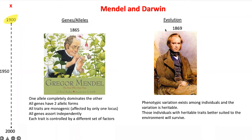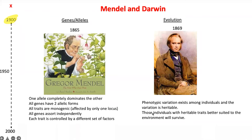Around the same time, Charles Darwin also published his book, having worked for many decades collating information. He analyzed and put all his thoughts into a theory we know as the theory of evolution. He said that phenotypic variation exists amongst individuals and that variation is heritable — so heredity came into the picture. Those individuals with heritable traits better suited to the environment will survive, which many reproduce in colloquial language as 'survival of the fittest.'